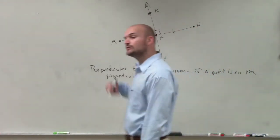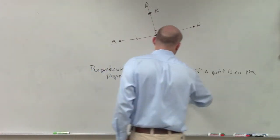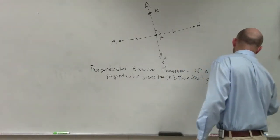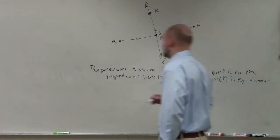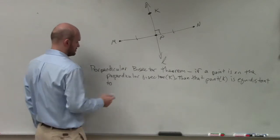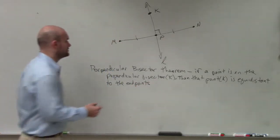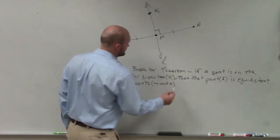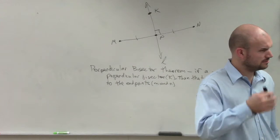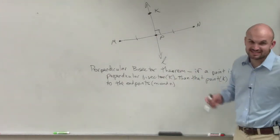But if you didn't copy it down last class period, or you weren't here, you definitely want to write this down. So if we have a line that's on our perpendicular bisector, hence K, then that point, which is K, is equidistant to the endpoints, which we have M and N. So if you have a line that bisects, so if we have a line that's going to be perpendicular, it's going to be equal distance to those two points.